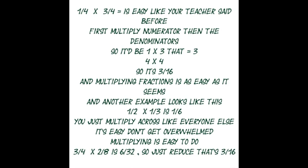Another example looks like this: 1 over 2 times 1 over 3 is 1 over 6. You just multiply across like everyone else. It's easy, you cannot get overwhelmed. And multiplying is easy too — do you see? 3 over 4 times 2 over 8 is 6 over 32.